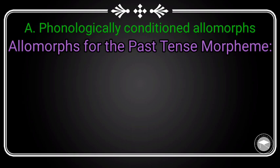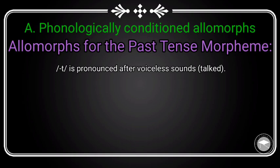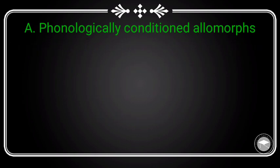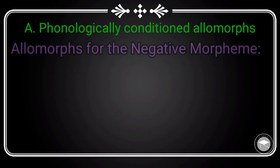نفس الشي كين عند الـ past tense. اس كيبقى عندنا ثلاثة طرق على حسب شنوجة قبل منها. إلا قبل منها voiceless sound كتنطق /t/، بحال في كلمات: talked أو asked. وكتنطق /d/ إلا جات بعد voiced sounds، بحال: grabbed أو changed. وكتنطق /ɪd/ إلا جا قبل منها الصوت /t/ أو /d/، بحال: wanted أو needed. كين كذلك المورفيمات اللي خاصين بالـ negation.